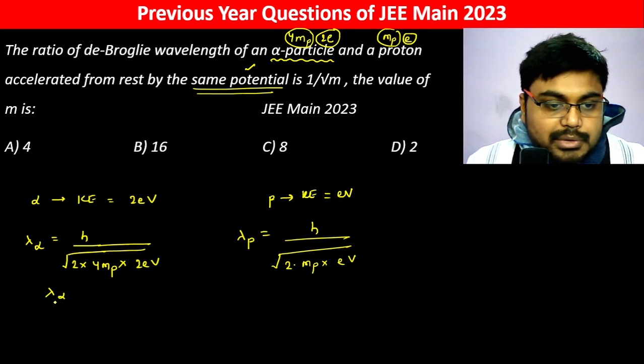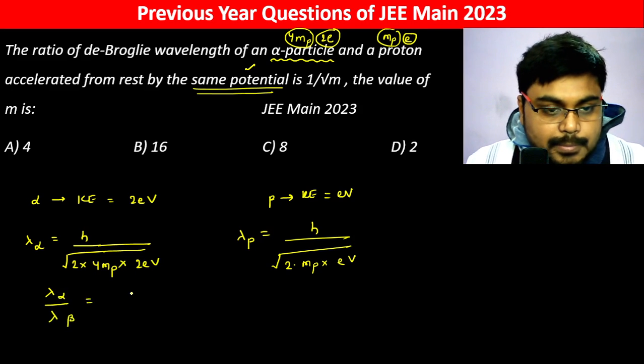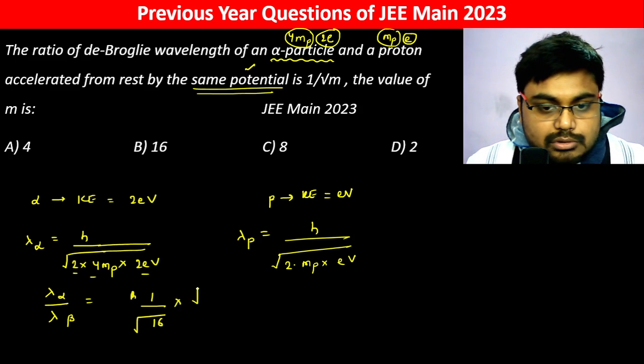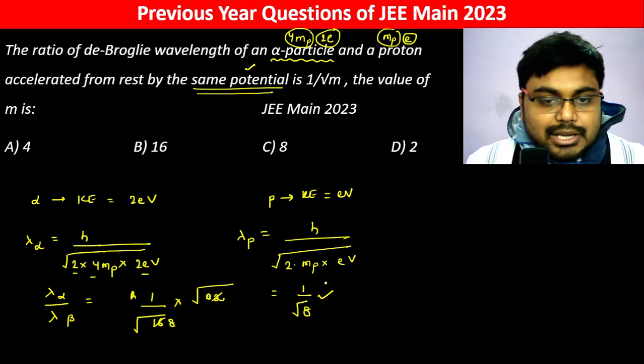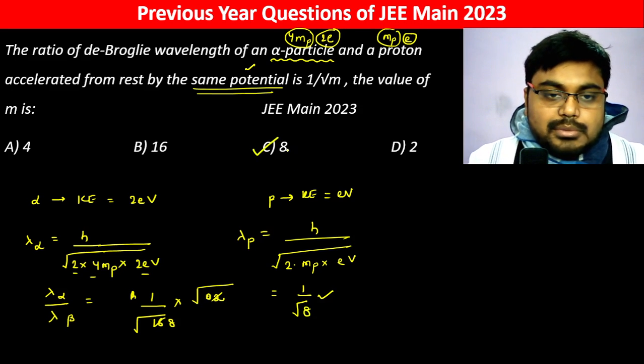The ratio of lambda alpha divided by lambda P equals 1 by root over 4, 8 into 2, 16 into root over 2. This gives 1 by root over 8, so m is 8.